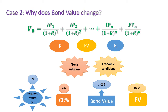Conversely, if the required rate of return is greater than the coupon rate of the bond, bond value should be less than the face value and this bond is said to sell at a discount — bond value less than the face value of 1,000.